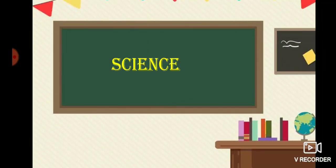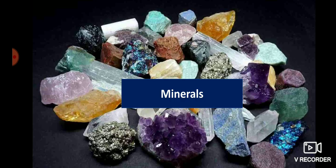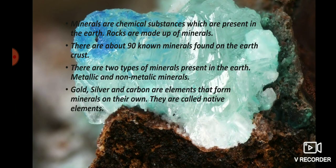Hello dear student, welcome to science class. Today in science class we will learn about minerals from the chapter Rocks and Minerals. You can see here the picture — there are many minerals of different colors present. These are naturally occurring minerals. Minerals are found in rocks; even rocks are made up of minerals. Minerals are chemical substances which are present in the earth, in complex or simple form. Due to the presence of minerals, different rocks have different colors.